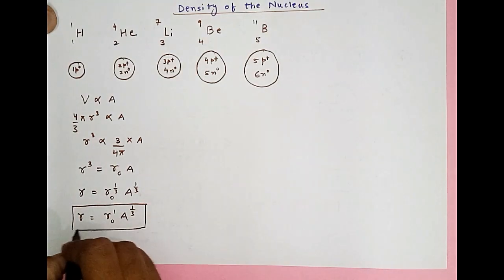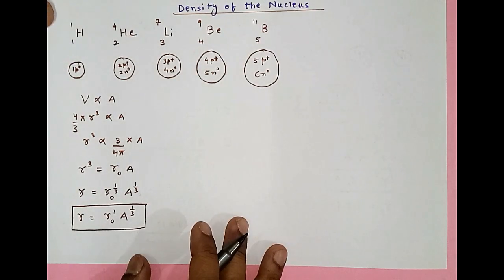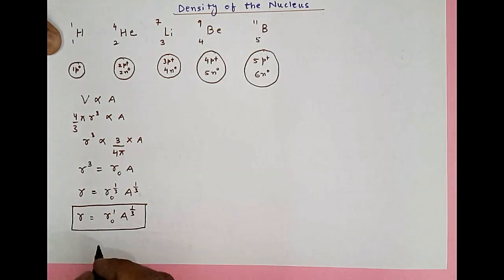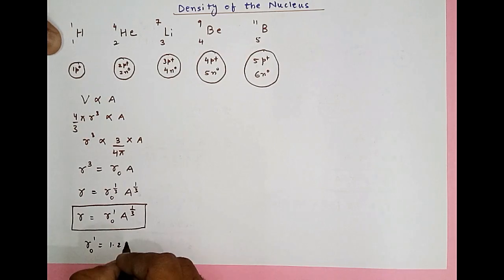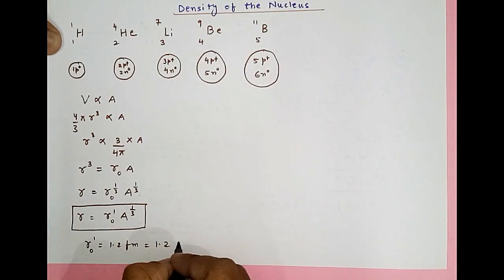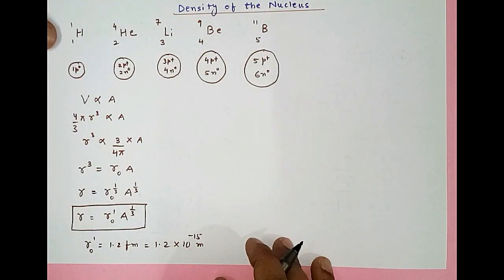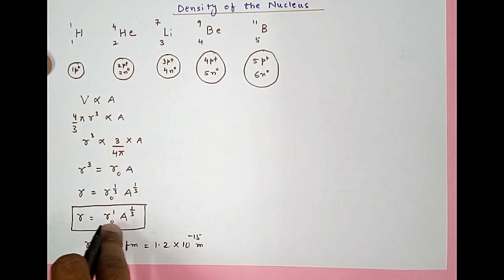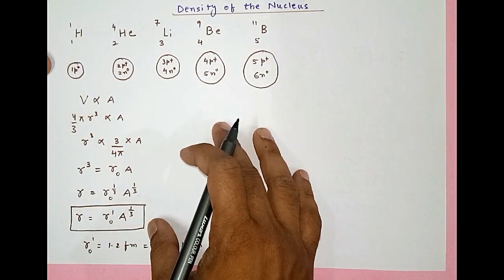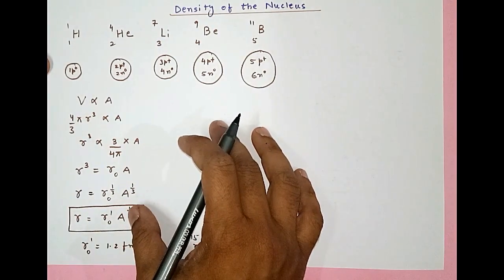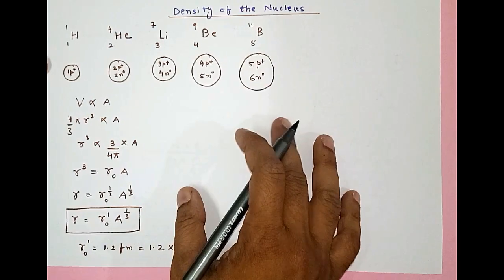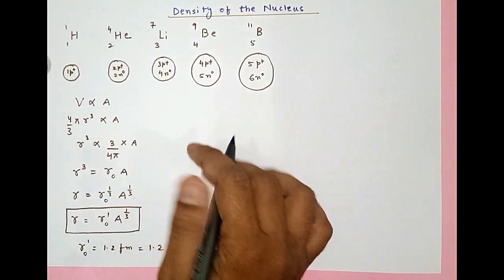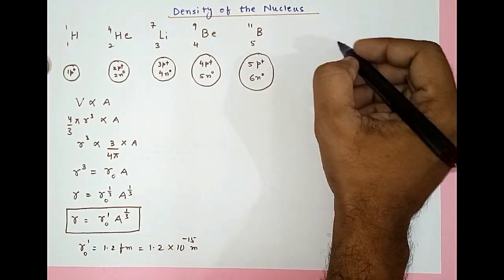This is a very important formula. The value of the constant r₀' is 1.2 femtometers, that is 1.2 × 10⁻¹⁵ meters. This was a short discussion about the nuclear radius of an atom with mass number A. Now let us continue our discussion on the density.